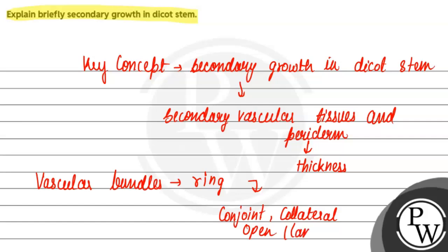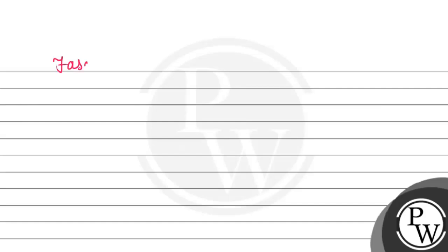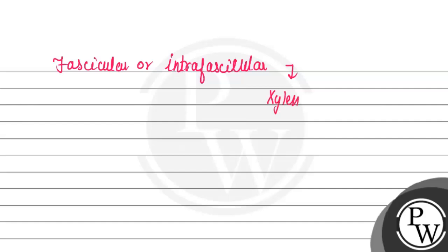Open type means that vascular cambium is present. This is called fascicular or intrafascicular cambium, which is present between xylem and phloem in the vascular bundles.